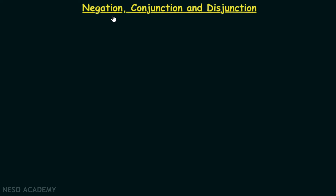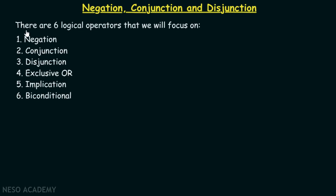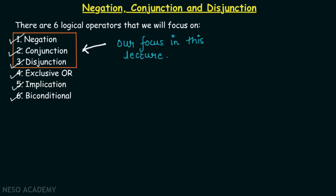From now onwards, we are going to talk about different kinds of logical operators available in propositional logic. There are six logical operators that we will focus on. The first one is called negation operator, the second one is conjunction, the third one is disjunction operator, the fourth one is exclusive or, the fifth one is implication, and finally we will talk about biconditional operator. In this lecture, we will focus on the first three operators: negation, conjunction, and disjunction.